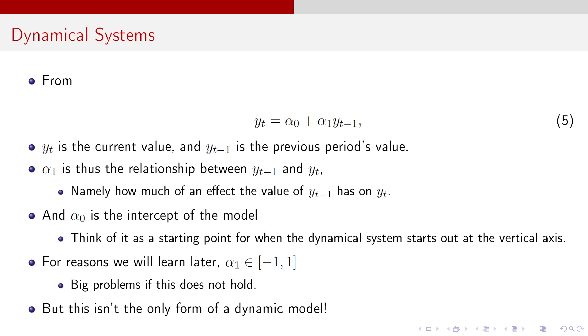So from just that one lag model, that Y_t equals alpha naught plus alpha one times Y_{t-1}, Y_t is the current value. Y_{t-1} is the previous period's value. Alpha one is thus the relationship between Y_{t-1} and Y_t. Think of it like slope-intercept form, right? Alpha one is the slope. It's the relationship between Y_{t-1} and Y_t. So if alpha one is the slope, alpha naught is the intercept, which think of it as like the starting point.